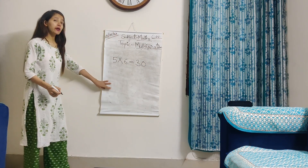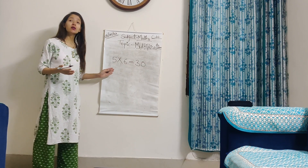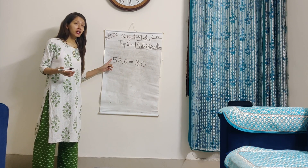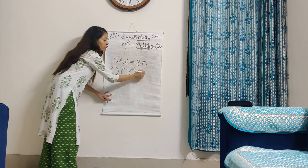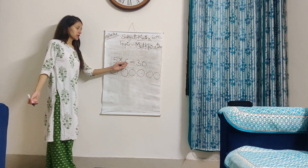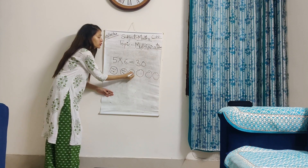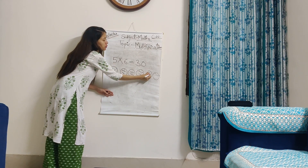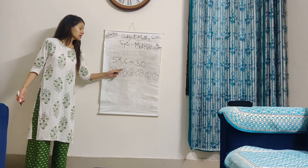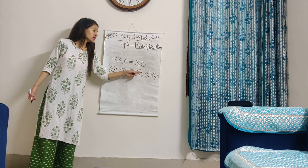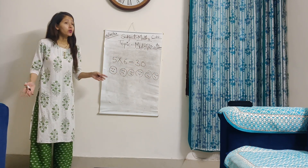You know that 5 sixes are 30. Now, if I have to draw it pictorially, how many groups and how many things are there? First number represents number of things, second number represents number of groups. So first make the number of groups — 6 groups: 1, 2, 3, 4, 5, 6. And how many things in each group? 5: 1, 2, 3, 4, 5 in each group. Now let's count: 1–5, 6–10, 11–15, 16–20, 21–25, 26–30. The answer matches — we are right.